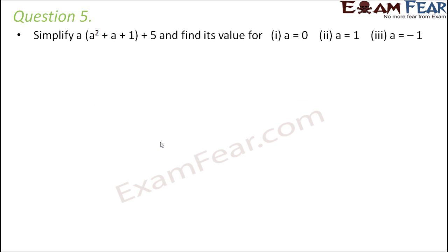Question number 5. Simplify a(a² + a + 1) + 5 and find its value for (i) a = 0, (ii) a = 1, and (iii) a = -1. So let us first simplify this part.